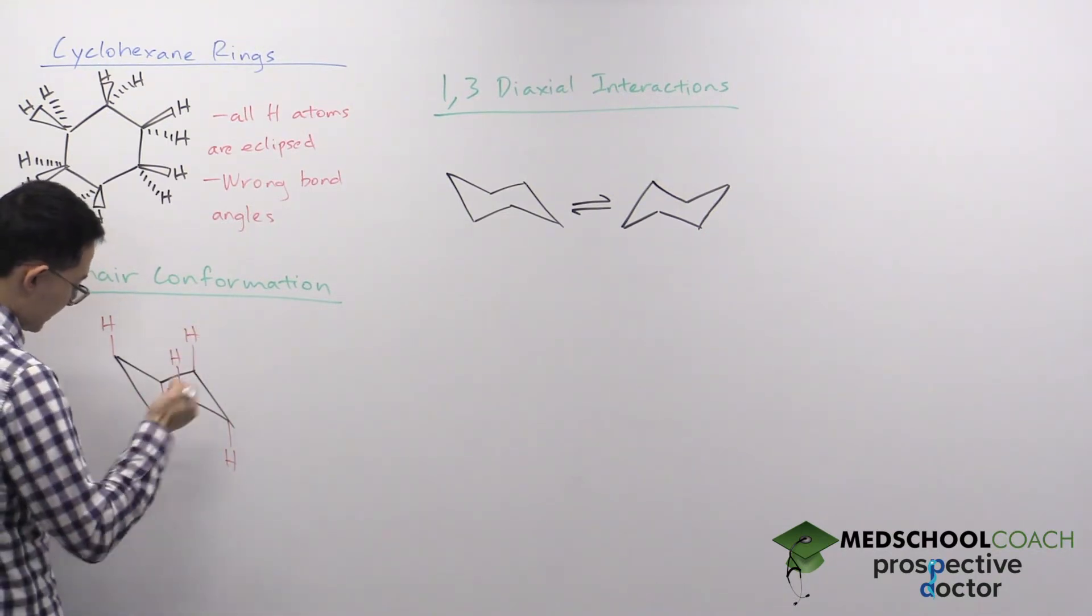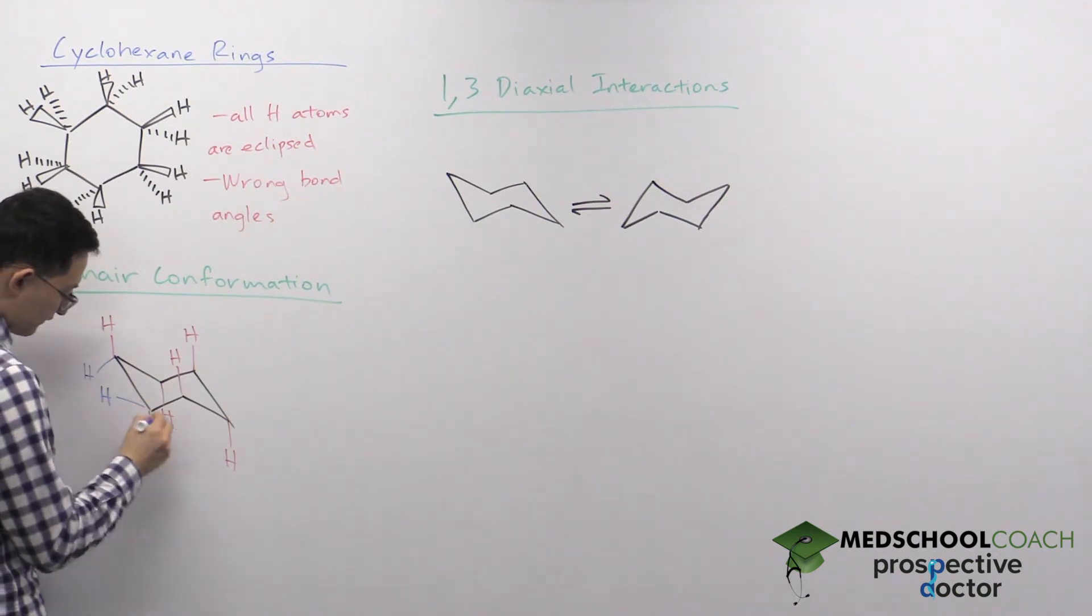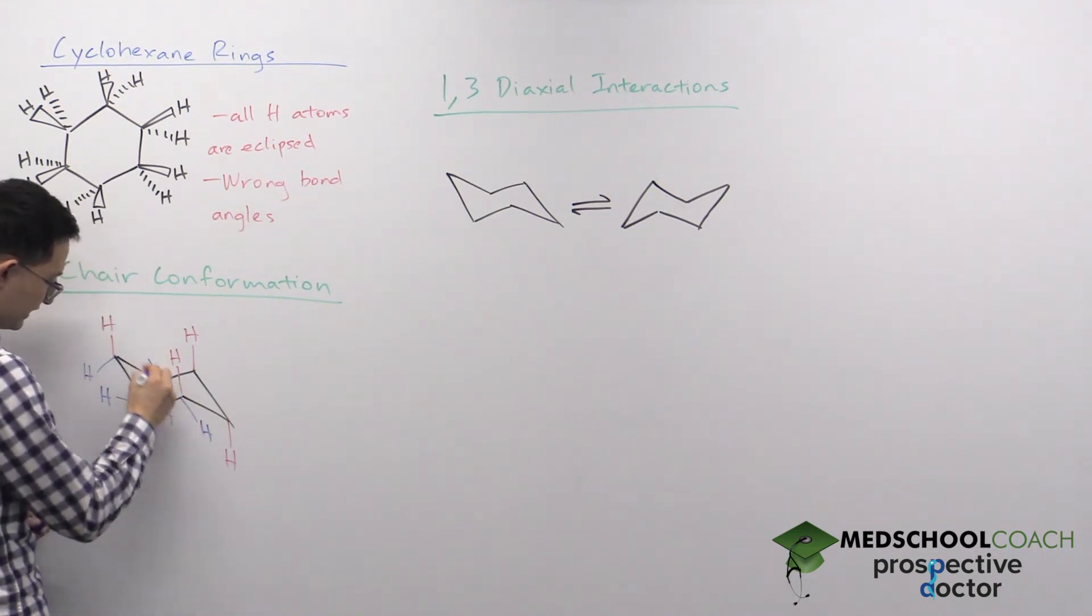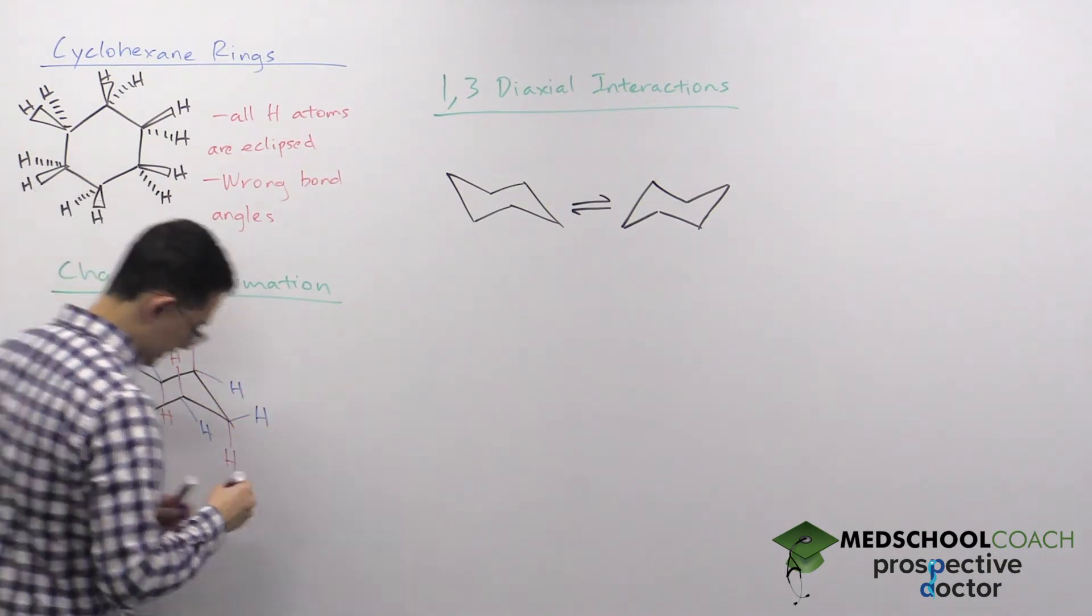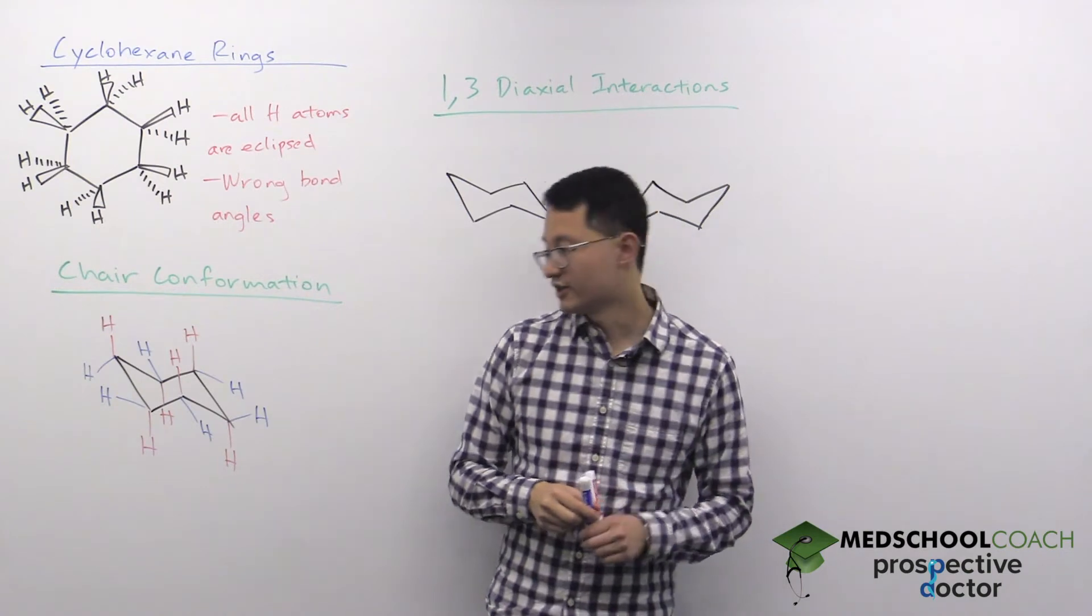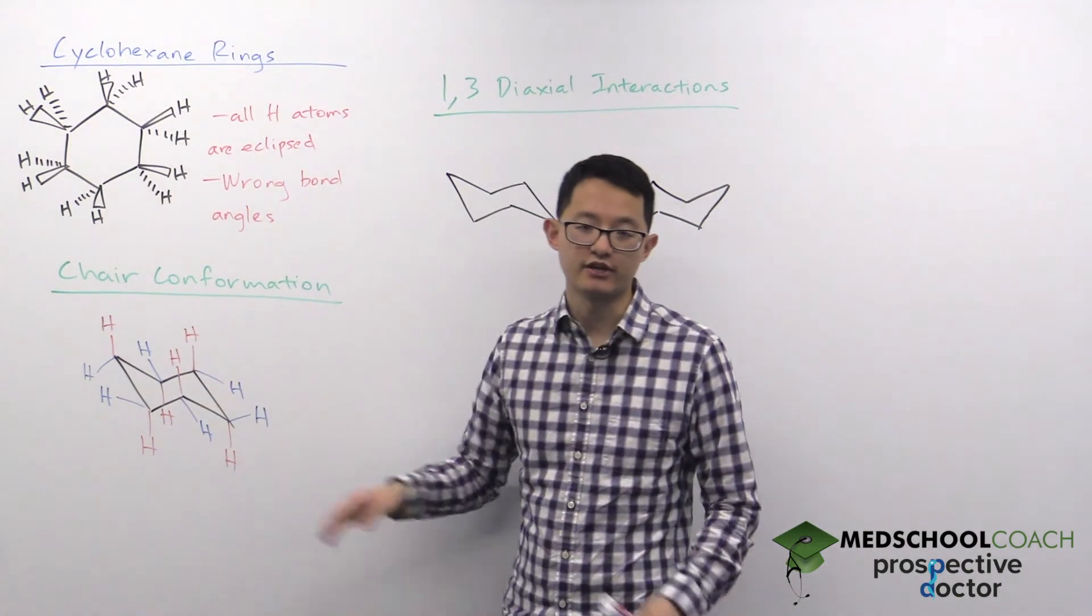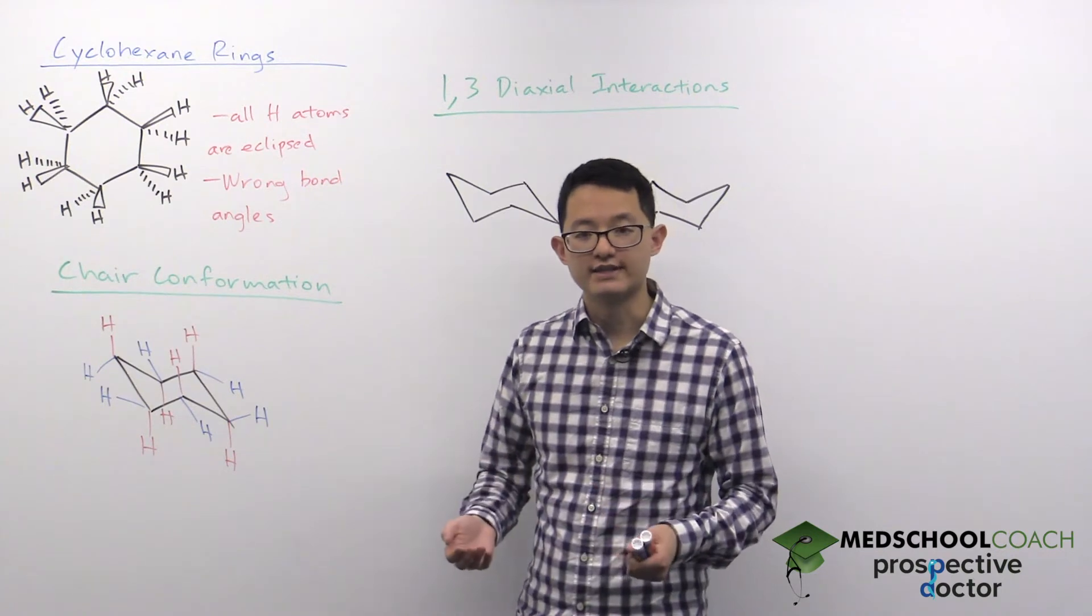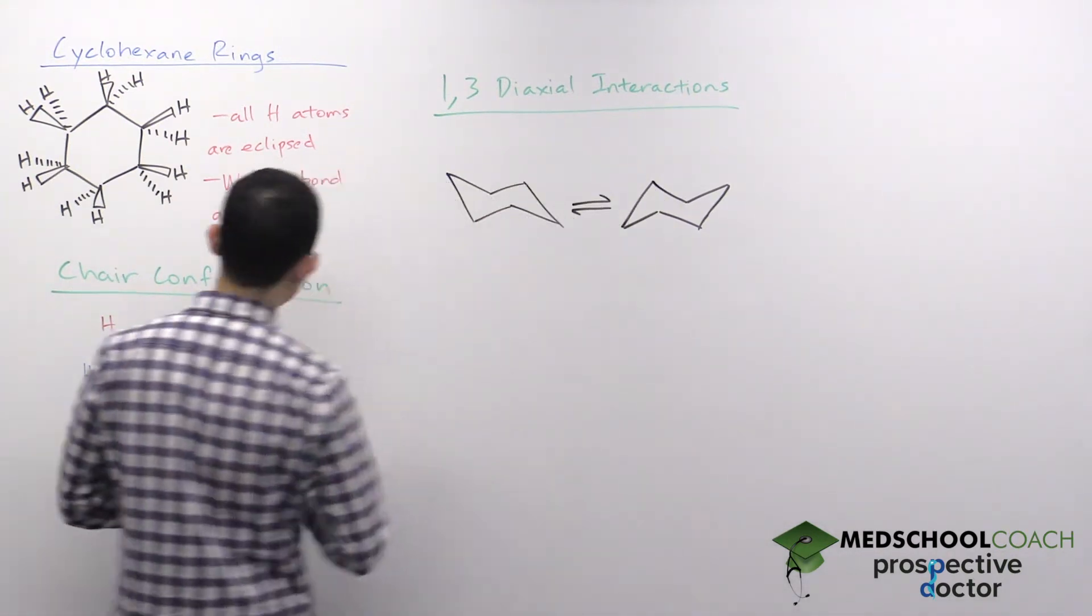I'm drawing the hydrogen atoms in two colors for a specific reason. If you take a look at all the hydrogen atoms within the chair conformation, you'll notice that they are now all staggered, which is much more stable.